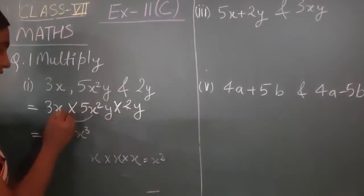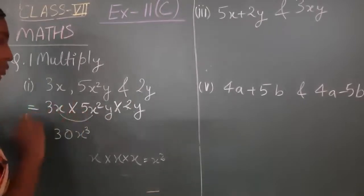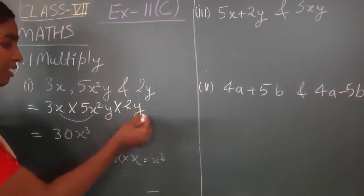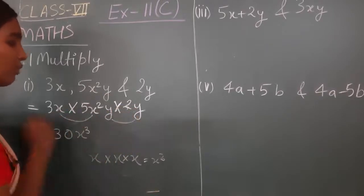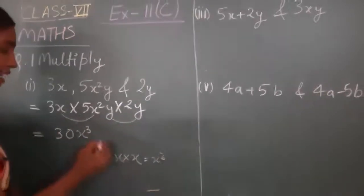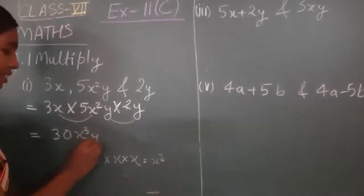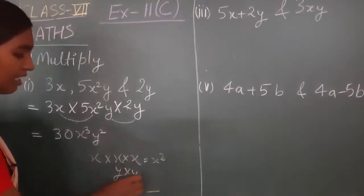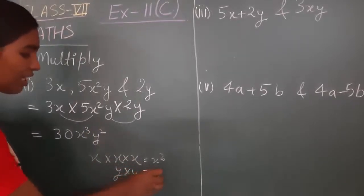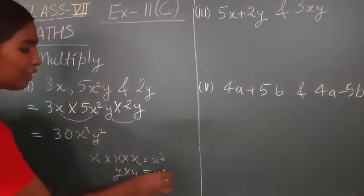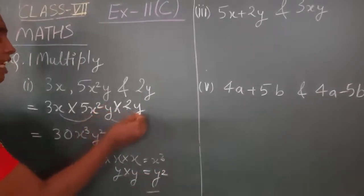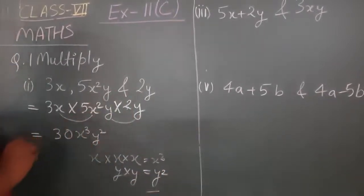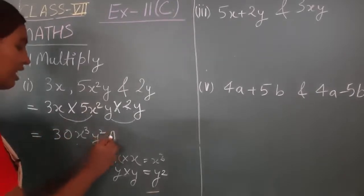Now come to y. In the first term there is no y — don't worry. In the second term there is y, and in the third term there is y. So multiply these: y multiplied by y becomes y square (y²). When y is written two times, it means y to the power 2. So the final answer is 30x³y².